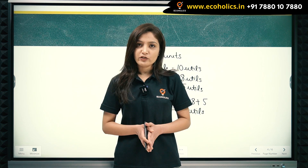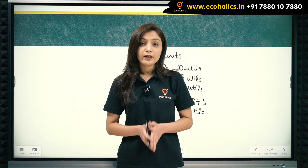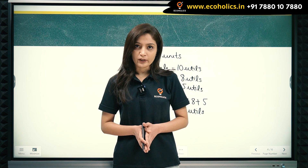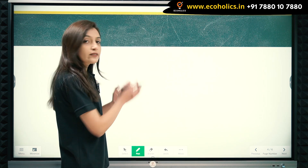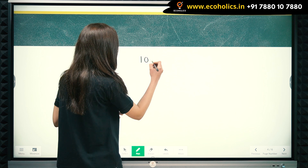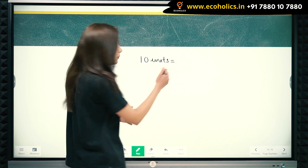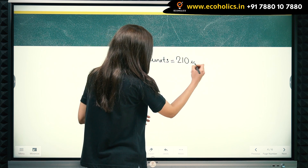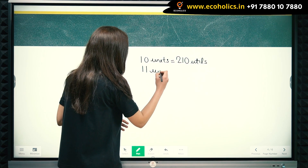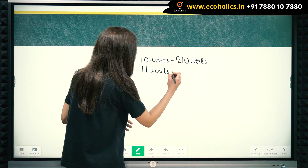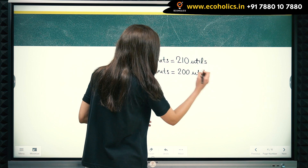Next, what is marginal utility? Marginal utility is the addition to total utility due to the consumption of an additional unit of a commodity. Let's understand marginal utility with the help of an example. Let's say ten units of a commodity gives the consumer two hundred and ten utils of satisfaction, and eleven units gives him two hundred utils of satisfaction.